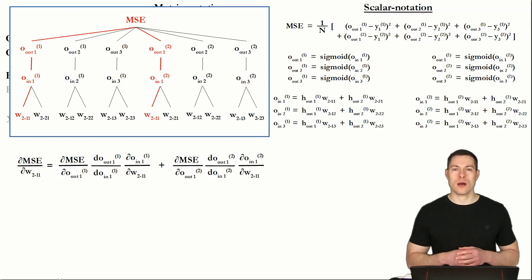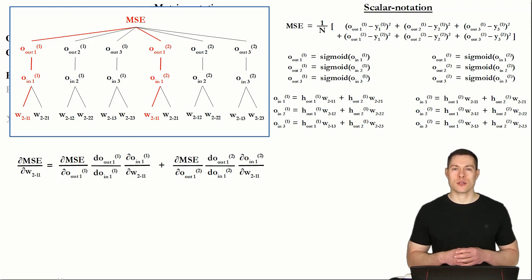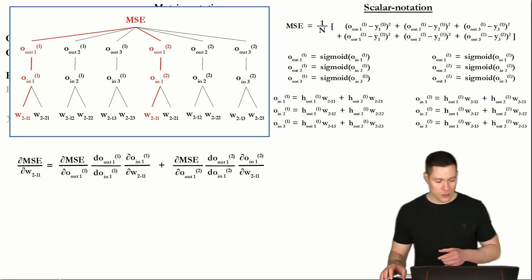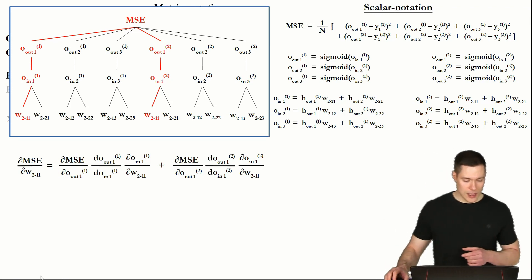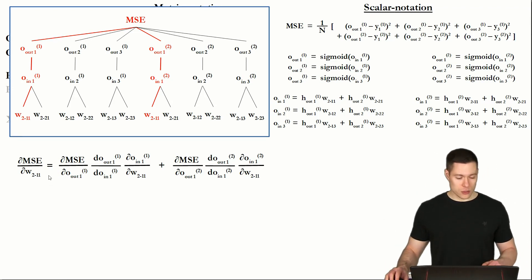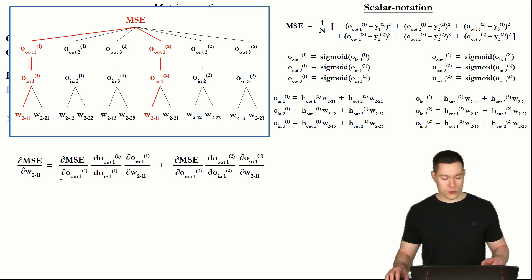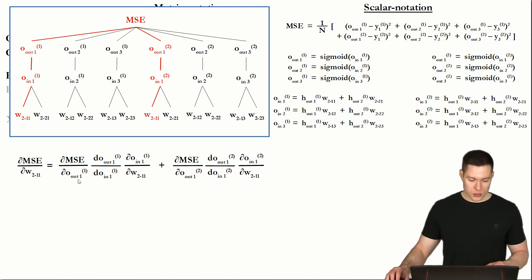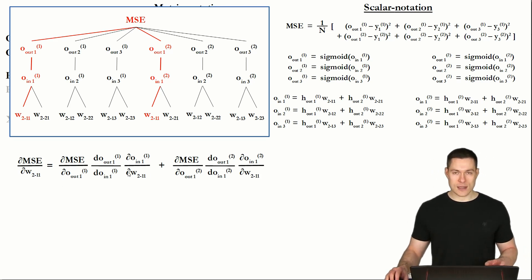What's up everybody, and welcome to part 10 of my Basics of Deep Learning series. In the previous video, we left off at the point where we have written down the partial derivative of the mean squared error with respect to weight 1,1 of weight matrix 2. And now we want to see what those individual expressions actually look like.